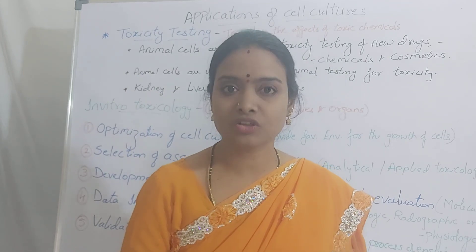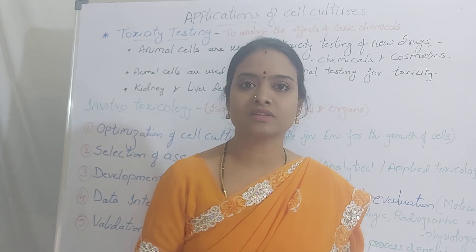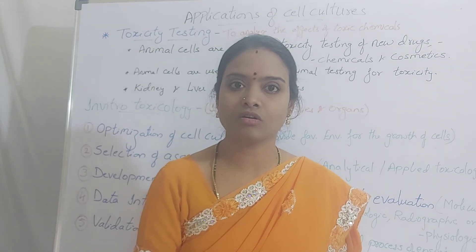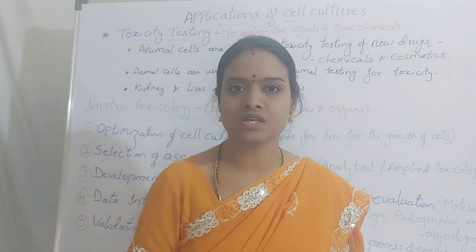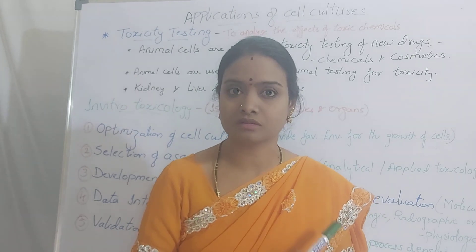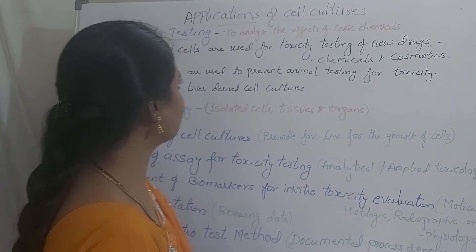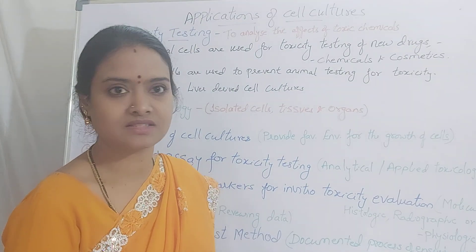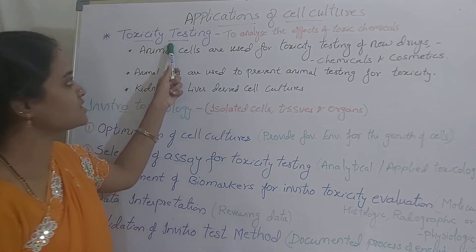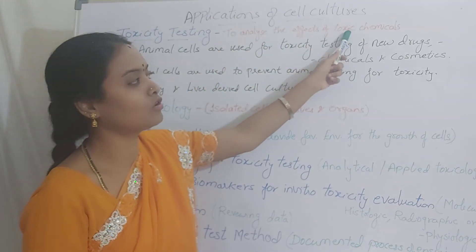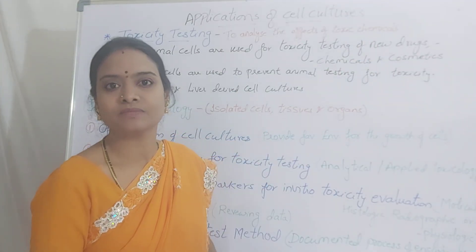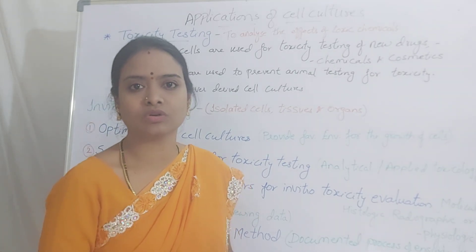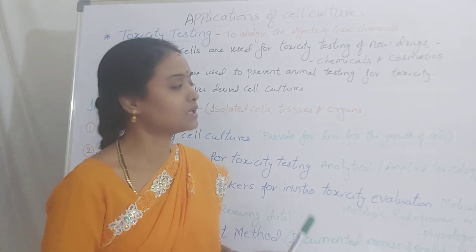What can be those harmful toxic chemicals? It can be any agricultural chemicals, or some new drugs which are produced, or some food additives, or anything. Whatever you want to test, you can test it by using cell cultures or cell lines. Toxicity testing is used to analyze the effect of toxic chemicals.